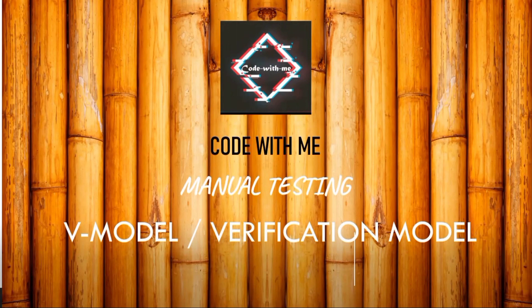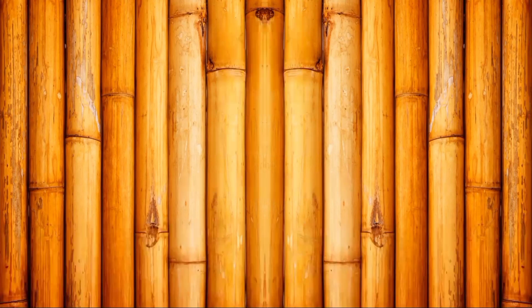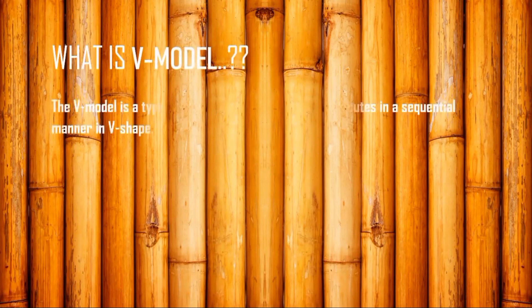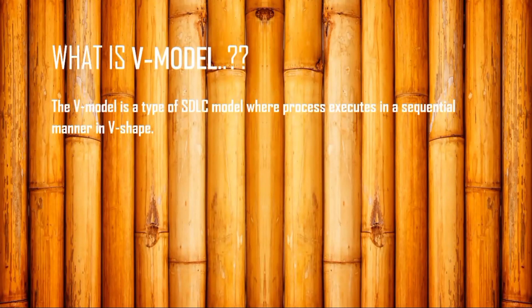Speaking about the definition: the V model is a type of software development lifecycle model where the process executes in a sequential manner in a V-shape. The definition is saying that the V model is a development lifecycle where the process executes in a sequential manner in a V-shape.